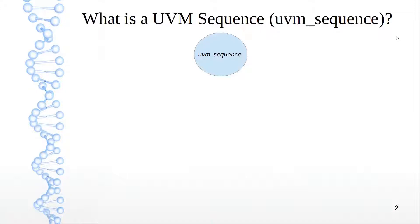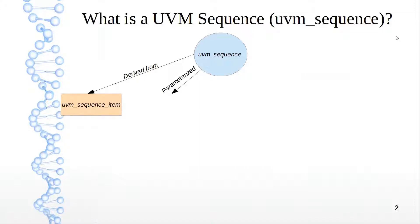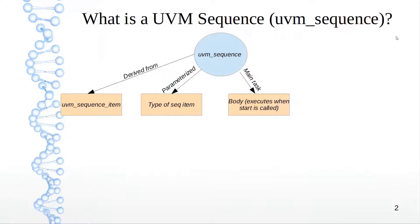What is a UVM sequence? Essentially it's derived from, or extends from, a UVM sequence item. How is it parameterized? It is parameterized by the type of sequence item that is being sent to the UVM sequencer to the UVM driver. When someone asks you what's the main task in the UVM sequence — it's the body task. The body task is the main task which gets executed when start is invoked.